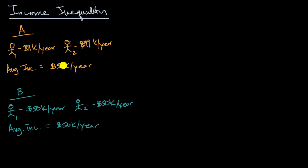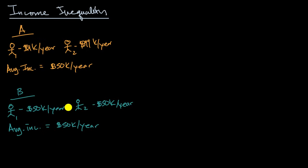What you see here is two countries that, if you just looked at the average income, seem similarly wealthy — similarly prosperous. But when you go a step deeper, you see that they are very different. Country A is a lot more unequal than country B when it comes to income. So the question is, above and beyond looking at things like average income or per capita GDP, how do you measure inequality?